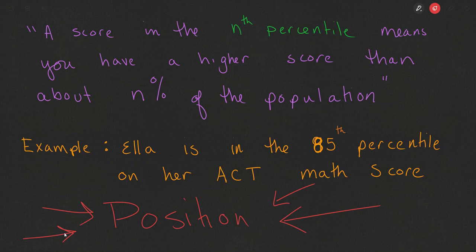If a student is in the 85th percentile on their ACT math score, what that means is that that student has done better than 85 percent of the others who took the exam. So percentiles are used when we're concerned with how you compare to others.